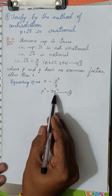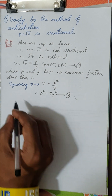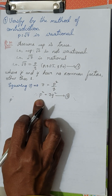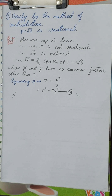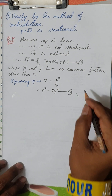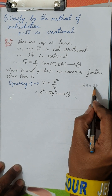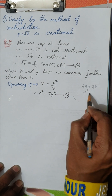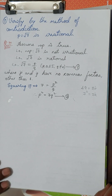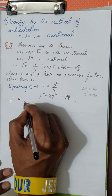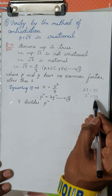P squared is equal to 7 times Q squared, so P squared is a multiple of 7. If P squared is a multiple of 7 then 7 divides P squared, which means P squared is divisible by 7. For example, 7 divides 49 since 49 is 7 squared. Therefore, if 7 divides P squared then it is obvious 7 divides P also.